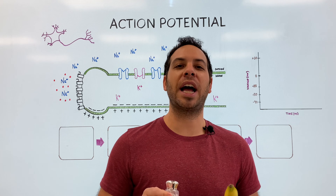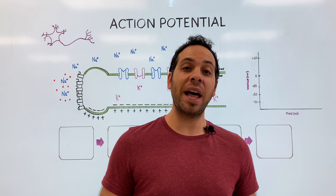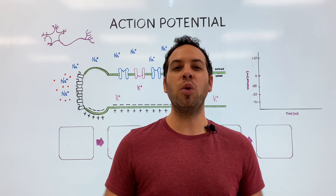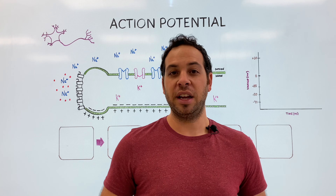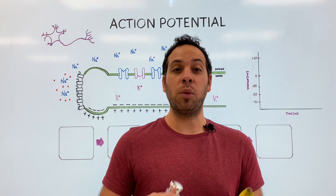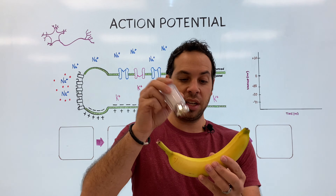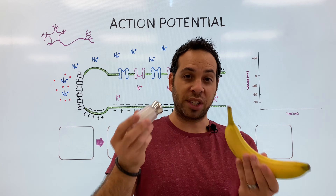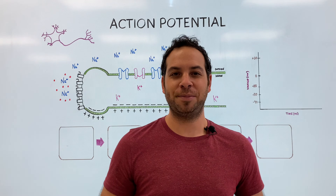Whenever you're trying to learn a complex concept as complex as an action potential, you should always try to think of a memory technique. For this, I want you to think of a salty banana. How's this going to help us? Stick around.